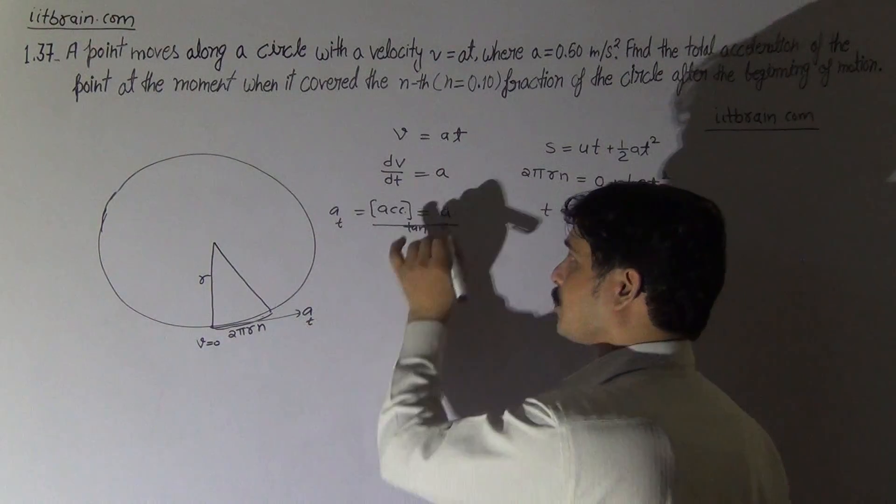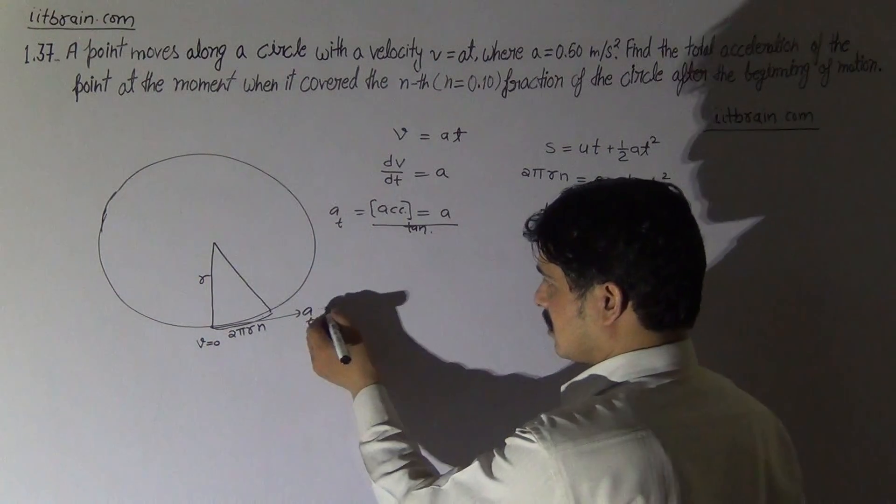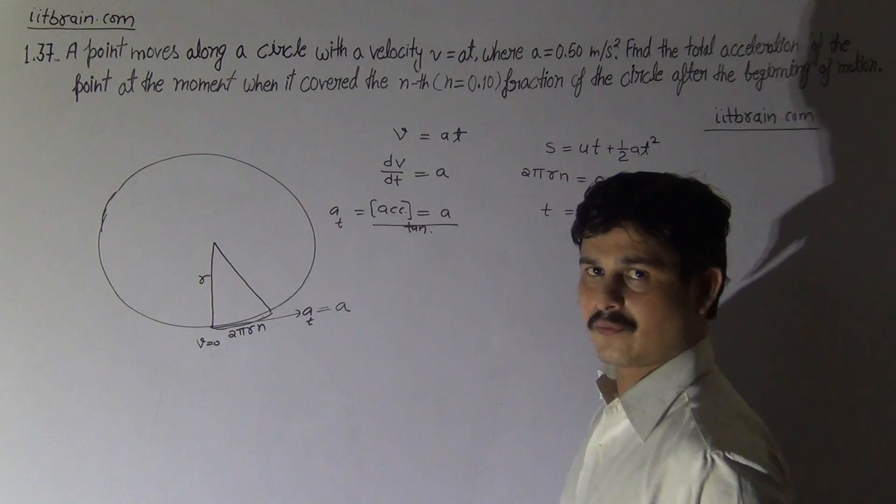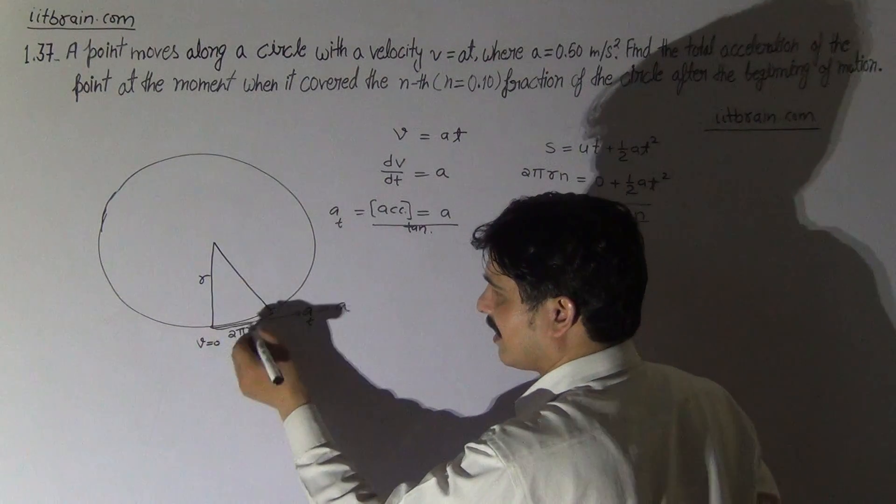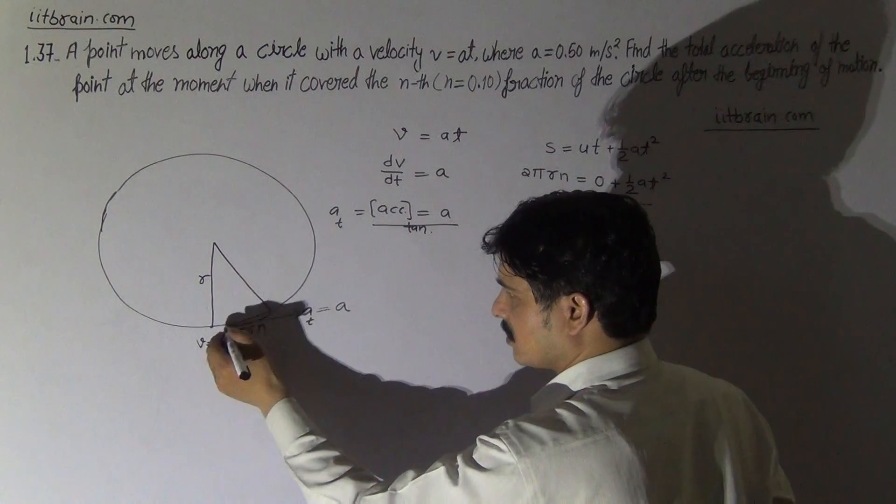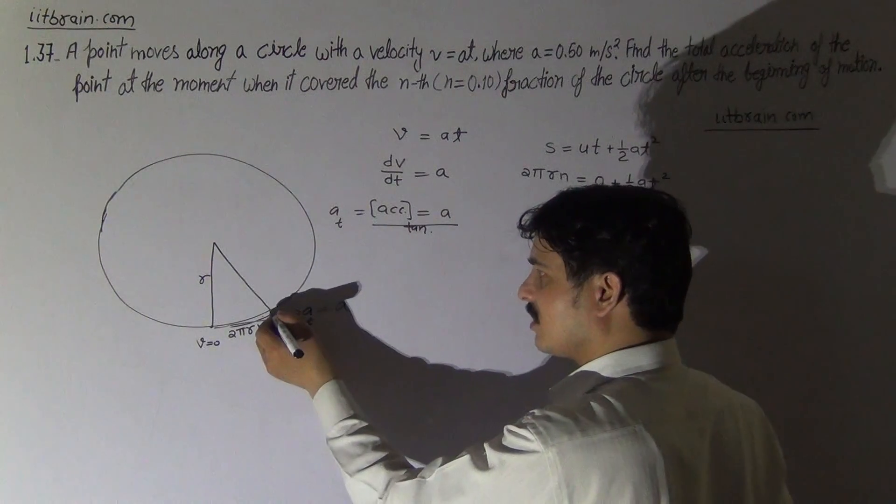We know the tangential acceleration is fixed, it is a. For finding centripetal acceleration, we know the formula of centripetal acceleration. In this much time, tangential acceleration at every point is a.